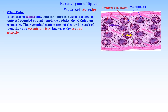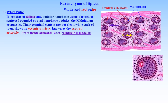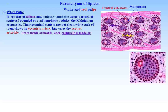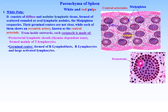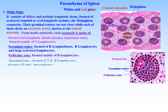Lymphocytes in the white pulp are arranged in four zones. From inside outwards, they are: peri-arterial lymphatic sheaths, or thymus-dependent zone, formed mainly of T lymphocytes; germinal center, formed of B lymphoblasts, B lymphocytes, and large activated lymphocytes; and follicular zone, formed mainly of B lymphocytes.